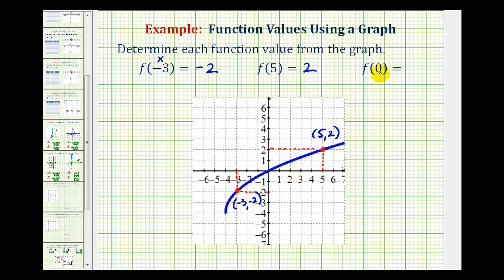The last example is f of zero. So we'll find x equals zero first, which is right here, which is actually a point on the function. The coordinates of this point would be zero, zero. So when x is zero, y is equal to zero, so f of zero is equal to zero.